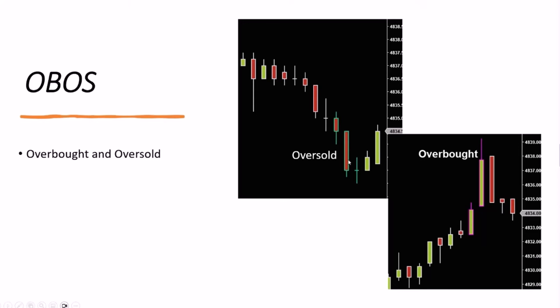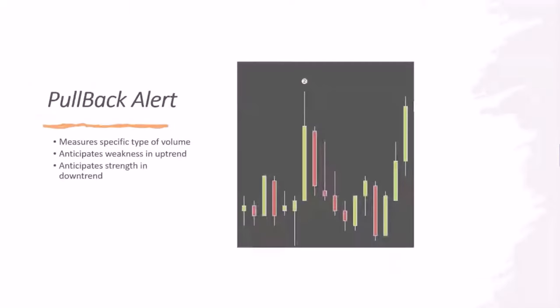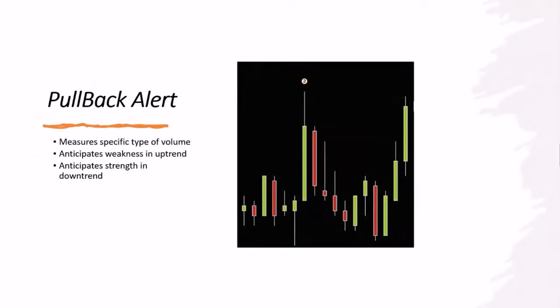Instead of displaying the full oscillator, we just put a colored outline on the bar — user-definable colors inside the indicator. So here's a confluence of two different things: overbought/oversold conditions and the rate at which orders are being processed. Now here's the third thing we're going to add to market structure — we're watching volume, but not all volume. Very specific types of volume.